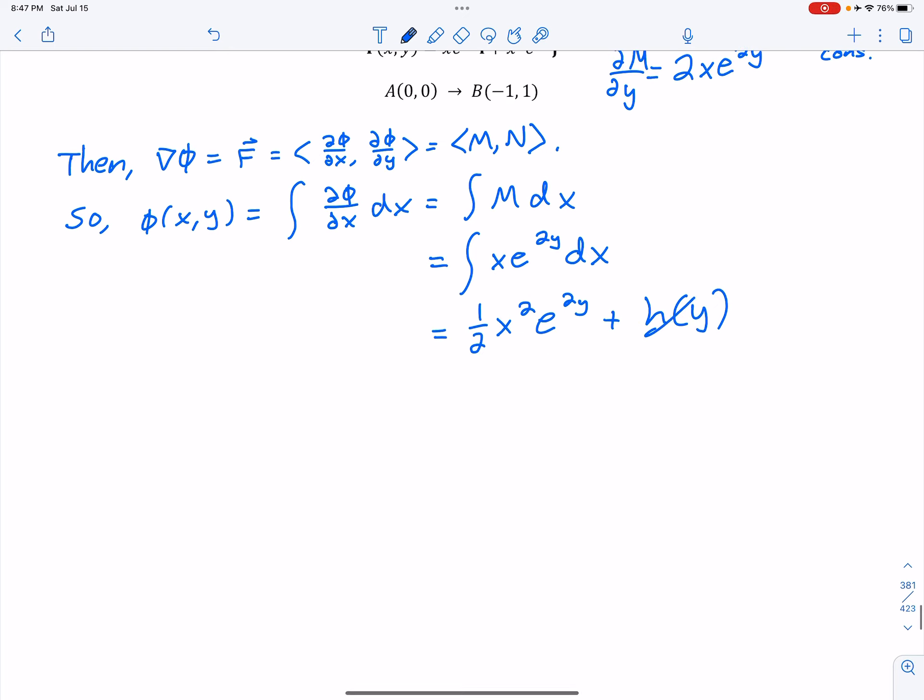Or would have gotten rid of that. That's a constant. It would have went to 0 if I would have taken my partial with respect to X. So I like to rewrite my phi at this point. Phi XY, because I'm going to do something with it right now. 1 half X squared, E to the 2Y, plus H of Y.